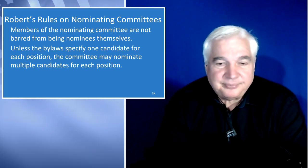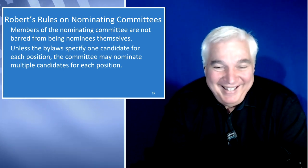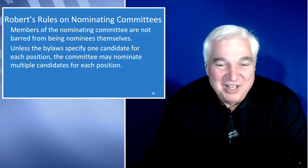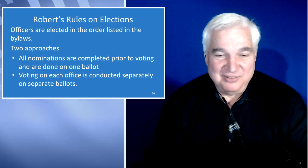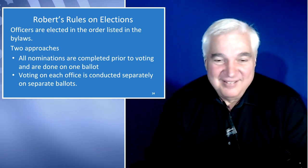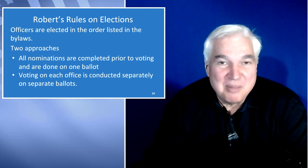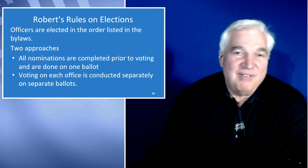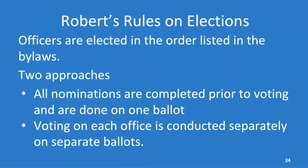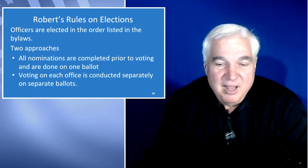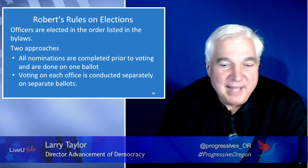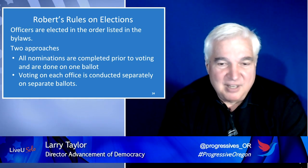Officers are elected in the order listed in the bylaws. If under 'officers' it starts with chair and then vice chair, that is the order in which you elect the positions. There are two approaches: either all nominations are completed prior to voting and it's all done on one ballot, or voting on each office is conducted separately on separate ballots. The benefit of the sequential approach is that if several people are vying for one office, you can allow them to run for another office if they stagger the balloting.